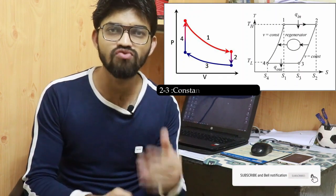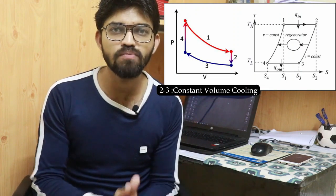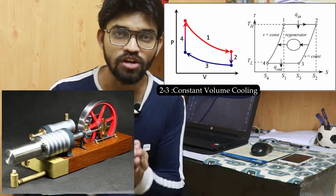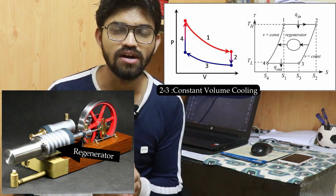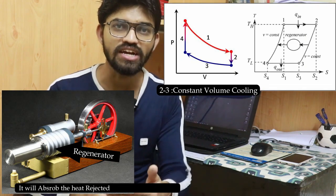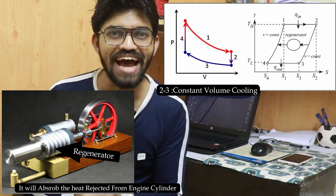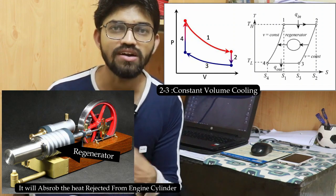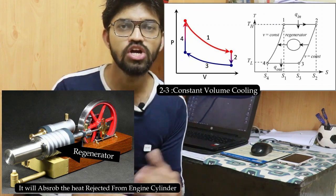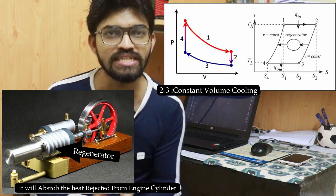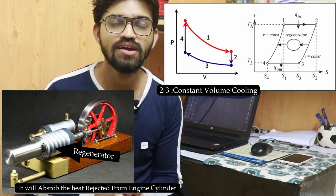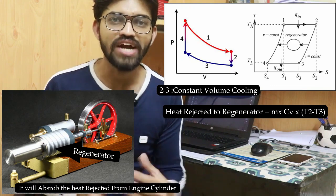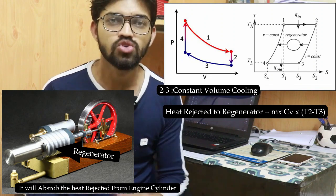The next process, two to three, is the constant volume cooling — the isochoric cooling process. An important feature of the Sterling engine is that it uses a regenerator. The regenerator absorbs the heat rejected during process two to three, acting as a heat exchanger. The heat rejected to the regenerator is calculated as: Q₂₃ = mCv·(T₂ − T₃).